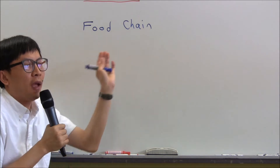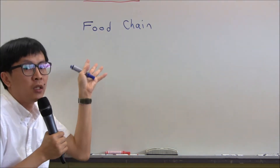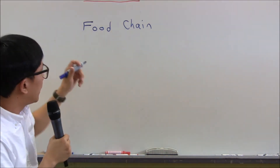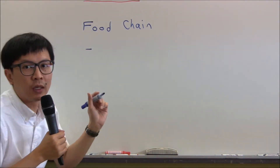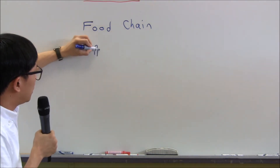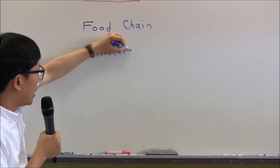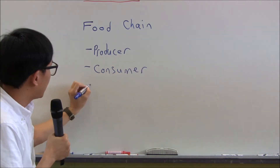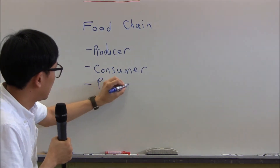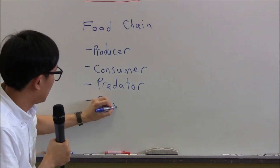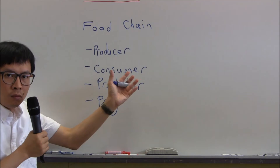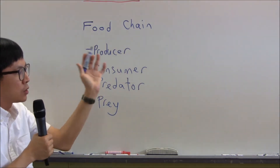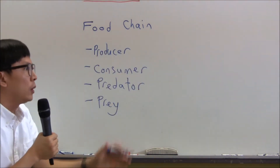I've gone through transfer of energy, so if you remember that, food chain is going to be relatively easy. In the topic of food chain, there are four things you need to know: what is a producer, what is a consumer, what is a predator, what is prey. And you need to be able to construct a food chain and explain the relationship of one organism to another.